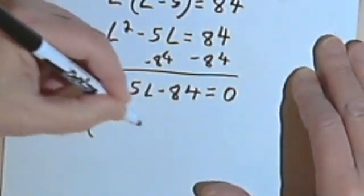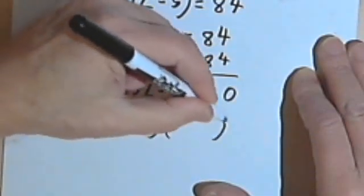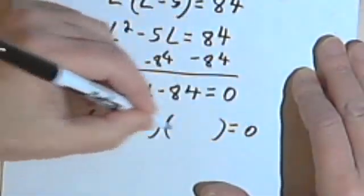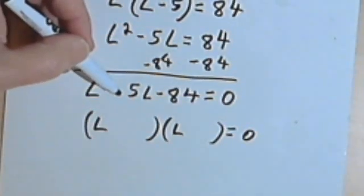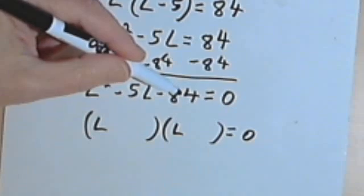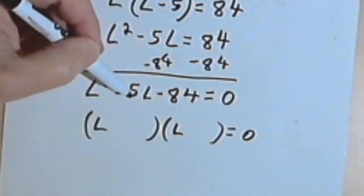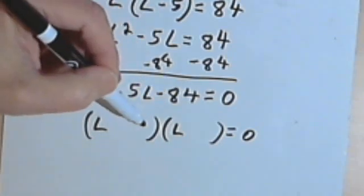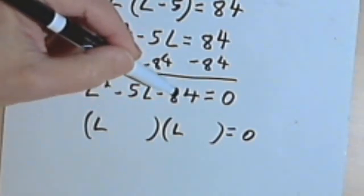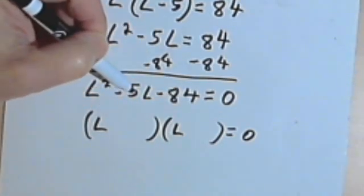And I'll get L squared minus 5L minus 84 equals 0. And I want to factor that. I've got a negative sign in the middle and a negative sign before the third term. So I'm going to have one positive and one negative number. I want them to multiply to 84, and I want the difference to be 5.